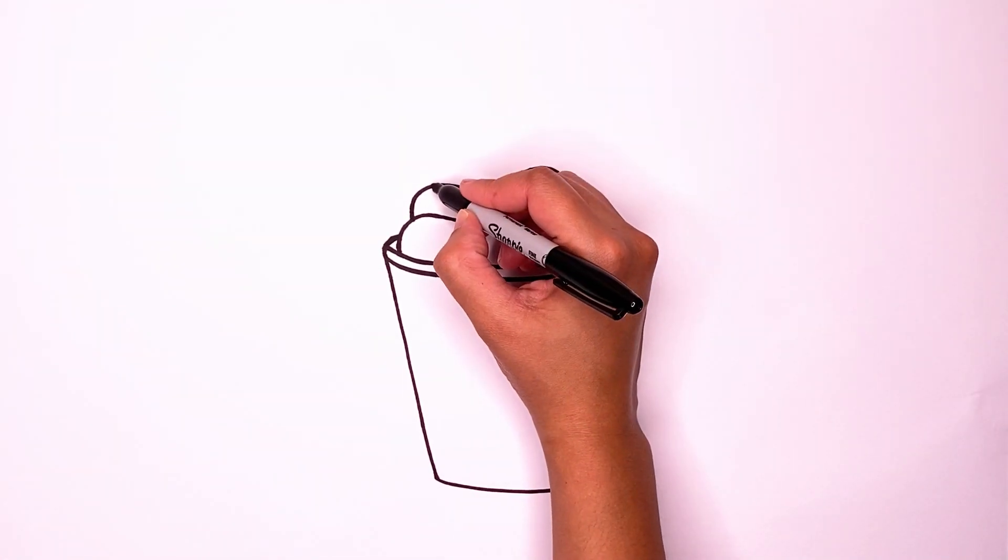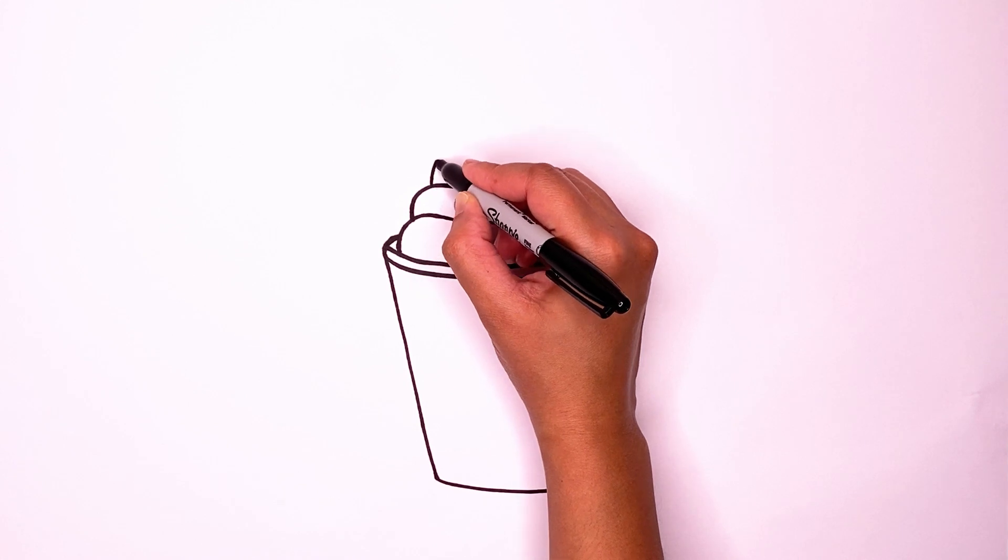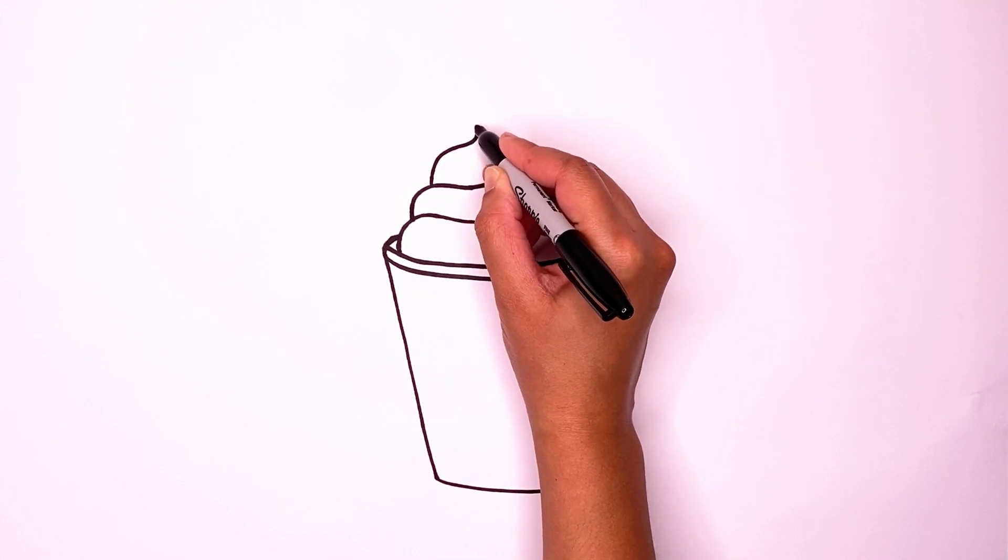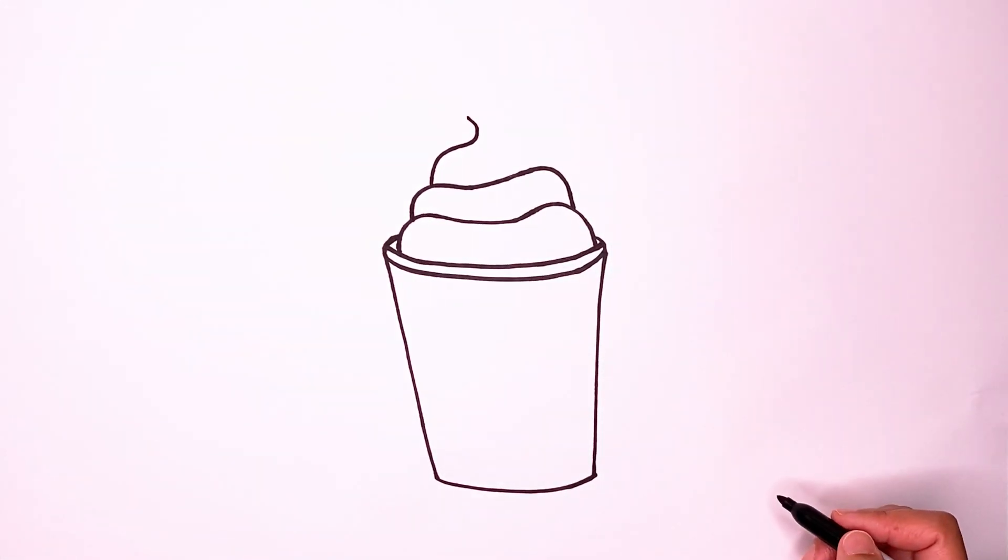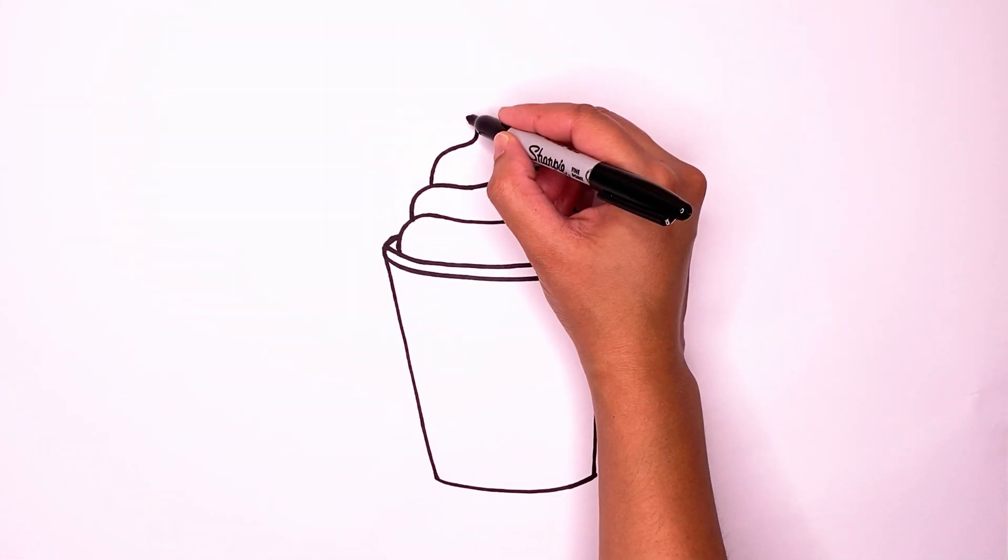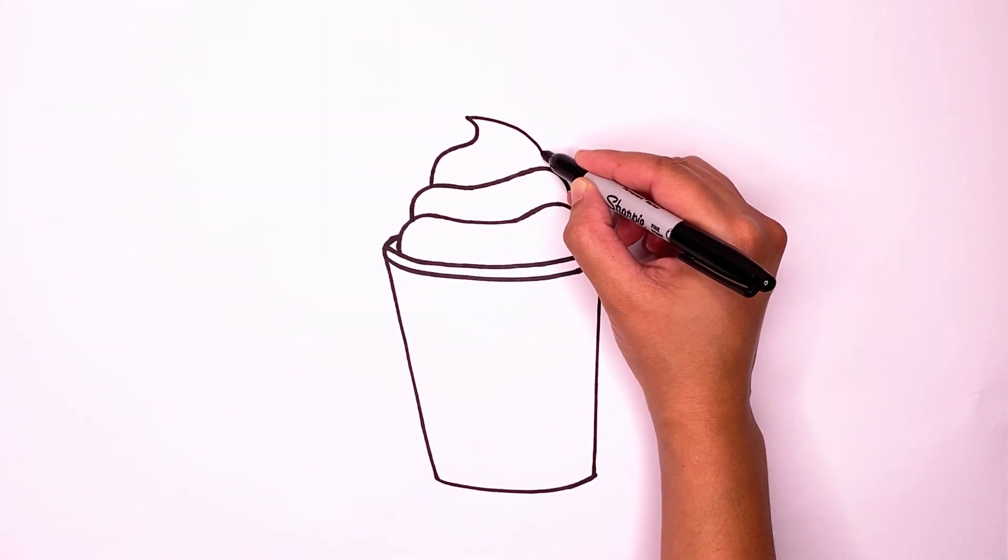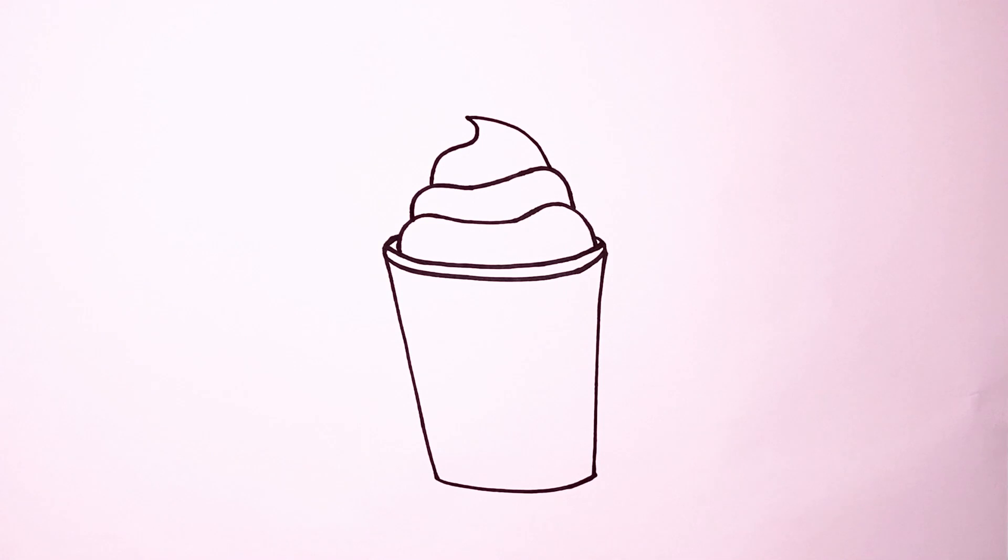Now we're going to draw our last layer up top. We're going to go up and this time it's going to be a little curve in. And then once you have that curve in, go down and in.